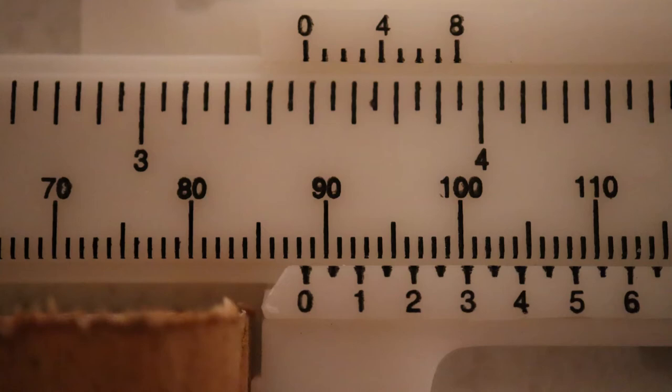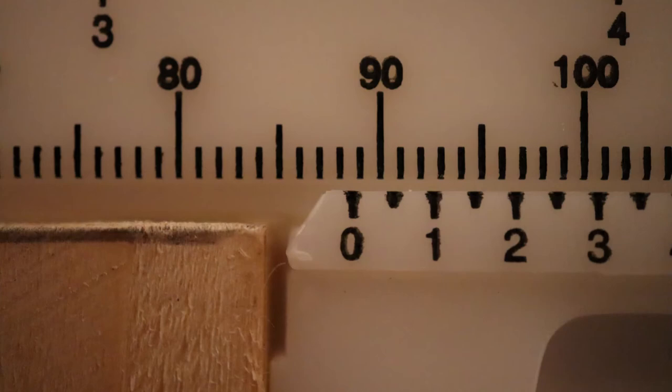Because of the way the vernier caliper works, we will always want to round the main scale reading down. Even if the scale looks much closer to the 89 than the 88, we should always take the lower value to be the main scale reading. So our main scale reading will be 88 mm for this case.